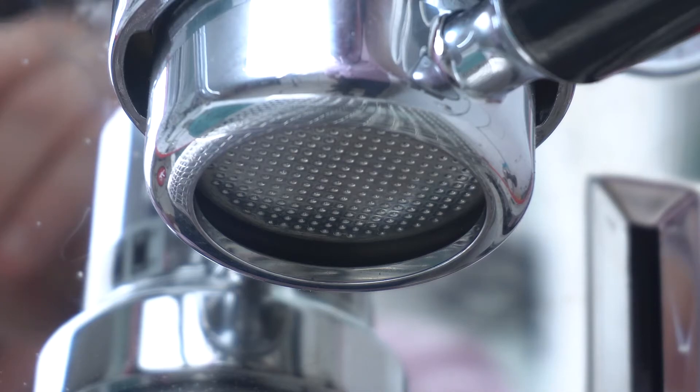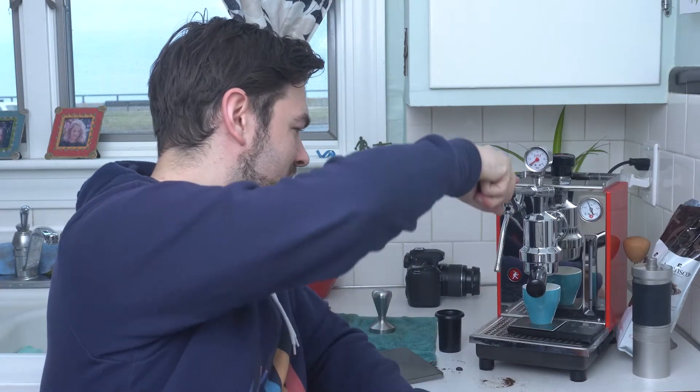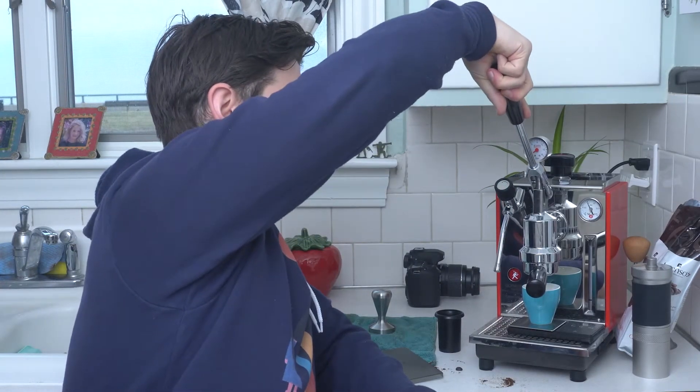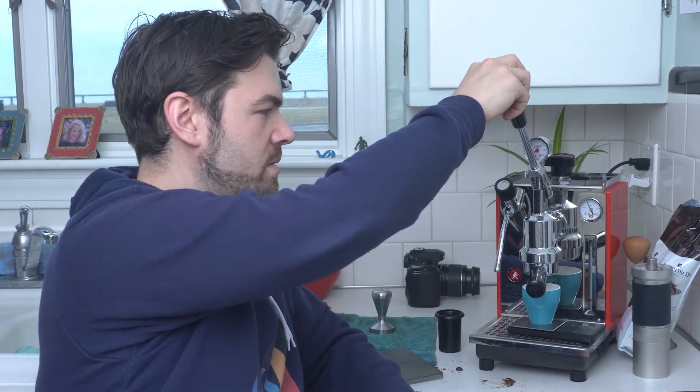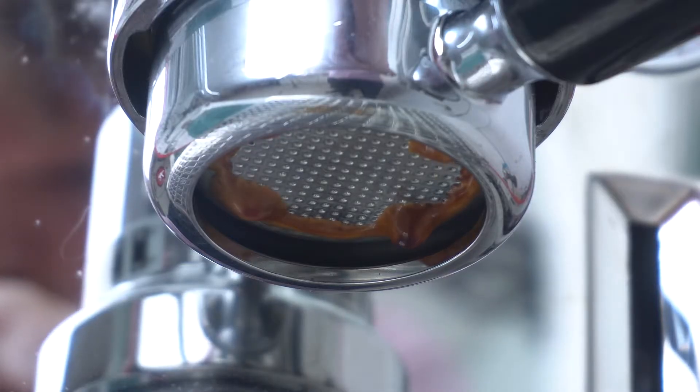And then the next step is pre-infusion. Lift up the lever and hear the water enter the group head. Next, you wait for some drips to fall into the cup and then you pull the lever down slowly and let the espresso fall into your cup.